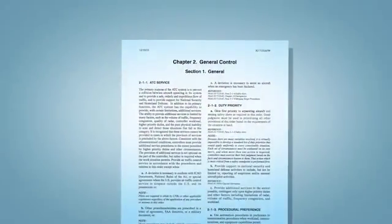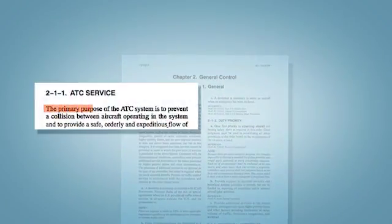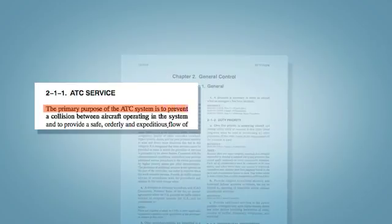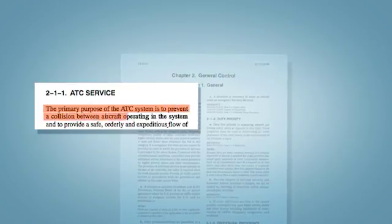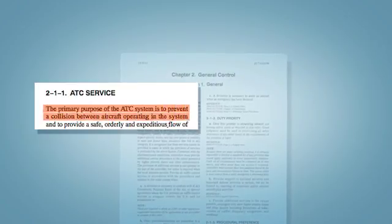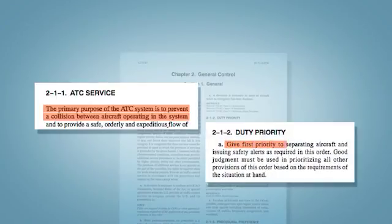As stated in the 7110.65, the primary purpose of the ATC system is to prevent a collision between aircraft operating in the system. It doesn't distinguish between IFR and VFR, giving first priority to separating aircraft and issuing safety alerts.